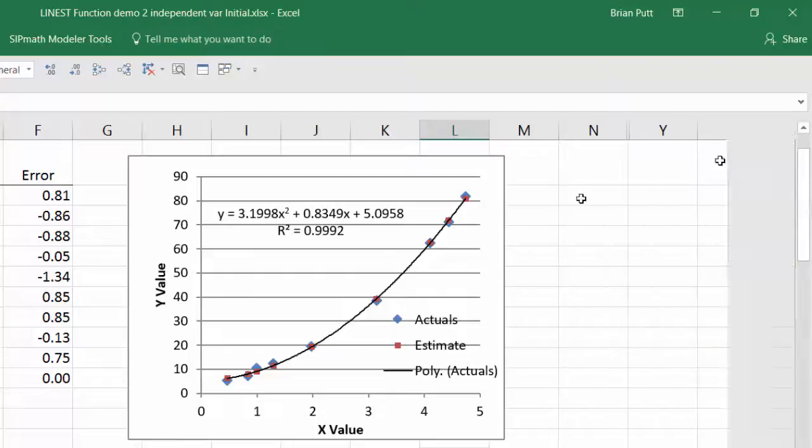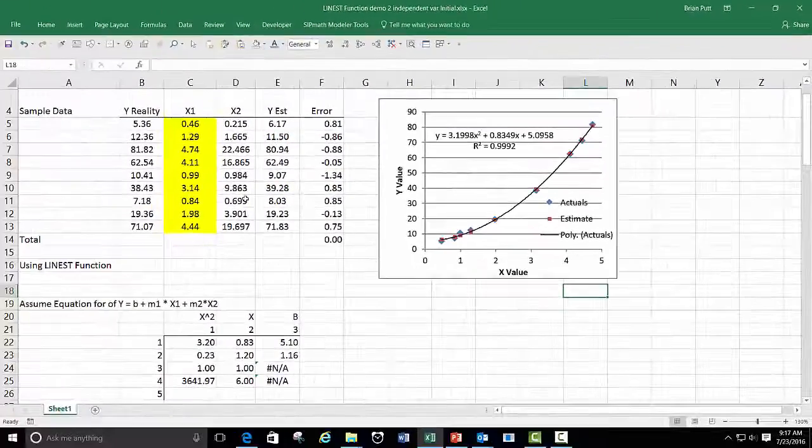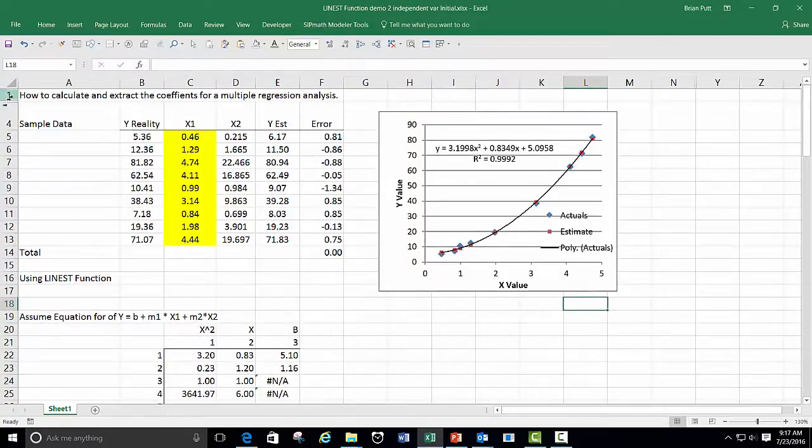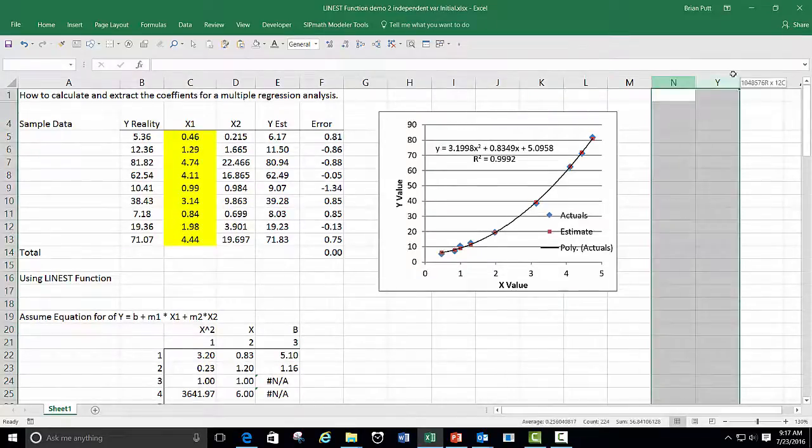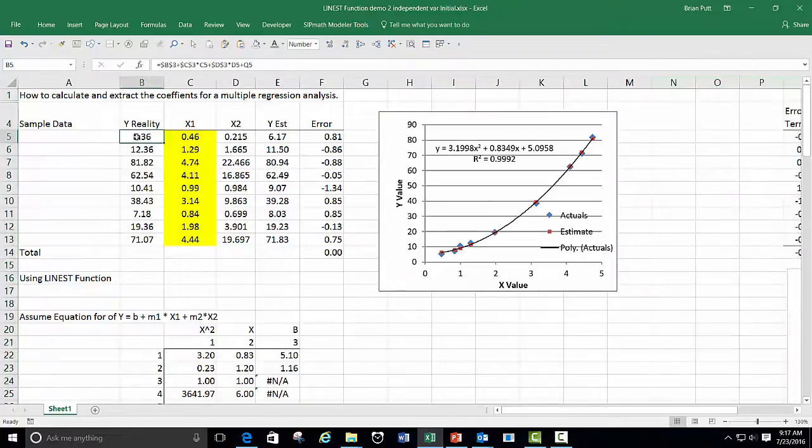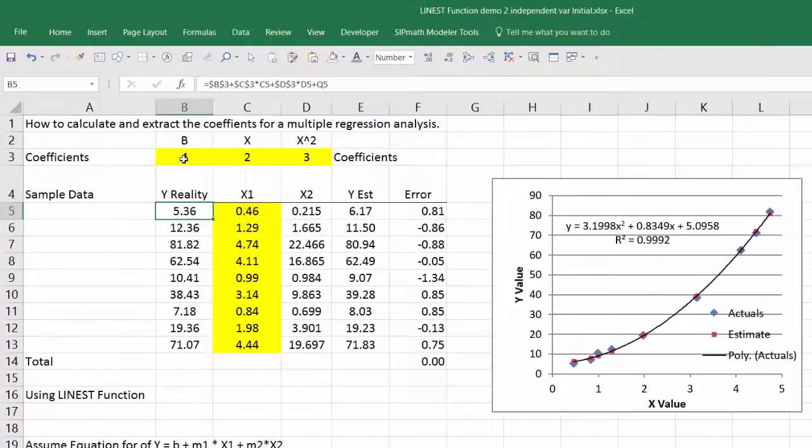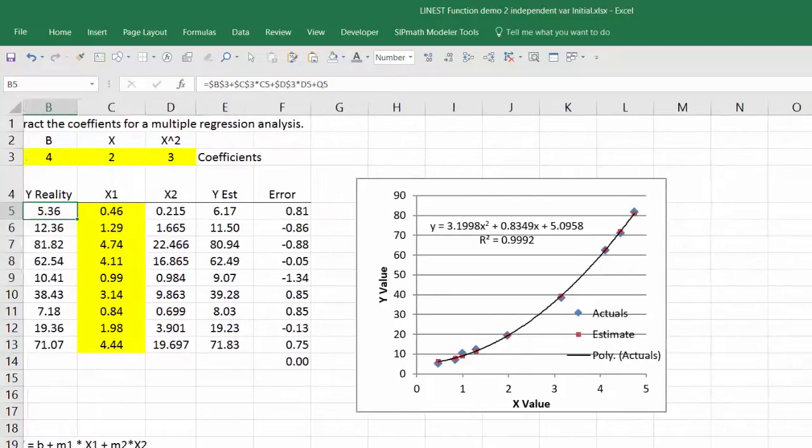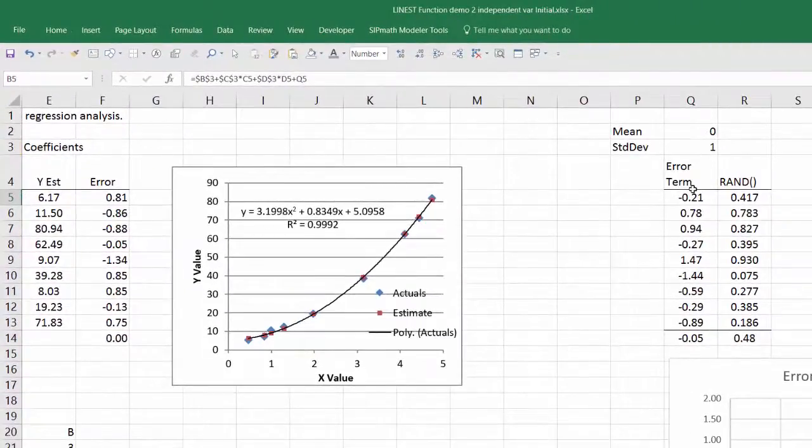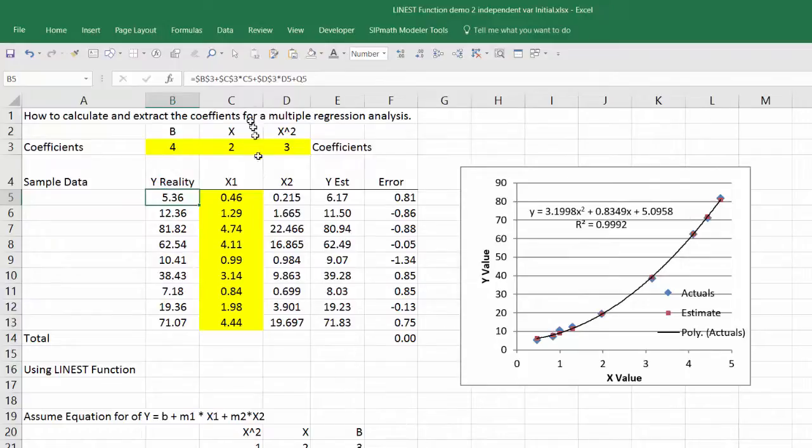One question that we might want to ask is how good is this forecast? Well, what I've done here is I based my equation on a constant 4, 2 times x1, 3 times x2 plus I added an error coefficient. And that error coefficient is actually over here, which is a normal 0, 1 distribution. So that's how I generated my reality. And my hope would be that the regression that I get would match these original coefficients.